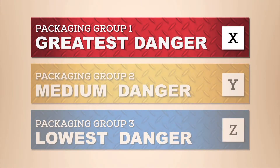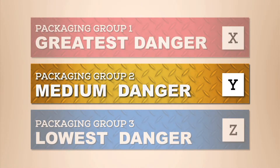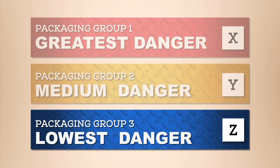Packaging group 1 has the greatest danger and has the highest hazardous level. Packaging group 2 has medium danger, which has a medium hazardous level. And packaging group 3 is the lowest in danger, which has a minor hazardous level.